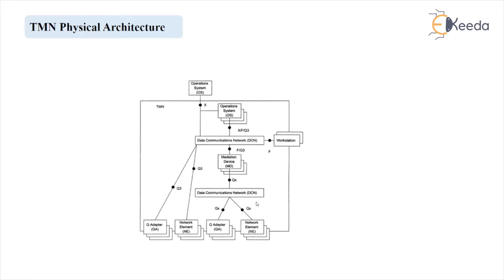As we are familiar with the functional architecture, in that particular architecture the Operation System (OSF block) can directly connect with the Meditation Device block, which can directly connect with Q Adapter, Network Elements and all that. But in the physical architecture, there is an intermediate block which is added, known as the Data Communication Network block. Because of this, you can observe that on both sides of the Meditation Device function block, there are DCNs attached, and to the DCN, Workstation is attached. So DCN is an extra added element in this particular physical architecture.